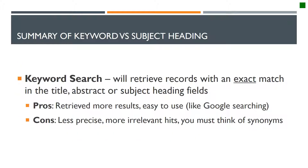So now to recap. Keyword searching will retrieve records with an exact match in the title, abstract, or subject heading fields. The pros are that it retrieves more results and it's easy to use — it's kind of like Google searching. The cons are it's less precise, you get more irrelevant results, and you must think about synonyms.